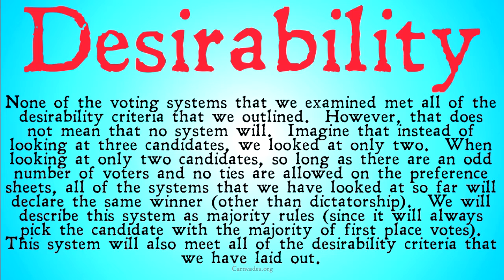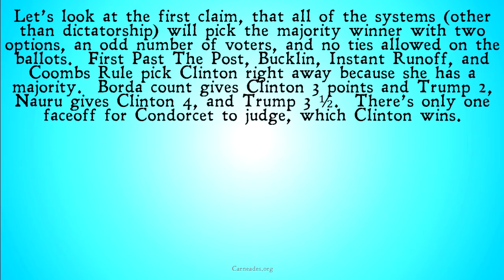When looking at only two candidates, so long as there are an odd number of voters and no ties are allowed on the preference sheets, all of the systems that we have looked at so far will declare the same winner — excluding dictatorship. We will describe this system as majority rules, since it will always pick the candidate with the majority of first place votes. This system will also meet all of the desirability criteria that we have laid out.